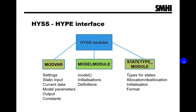The StateTypeModule provides HYS and HYPE with six types of state variable subroutines that hold all states for a hydrological model. Procedures for allocating, deallocating, and initializing state variables. Procedures for initializing state variables for a submodel. Procedures for transforming states to arrays for writing and reading on file.